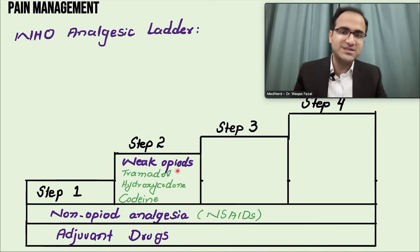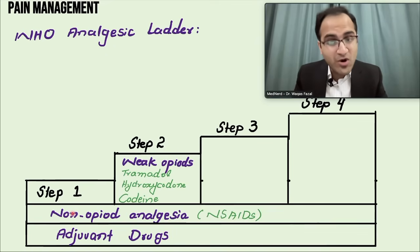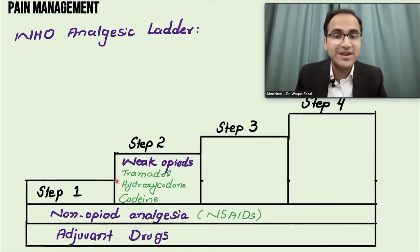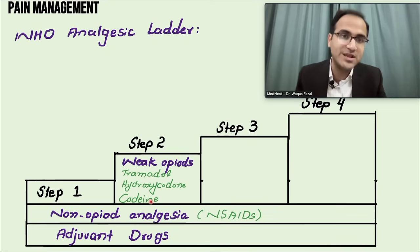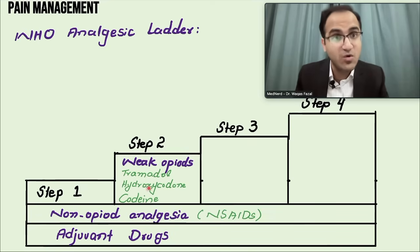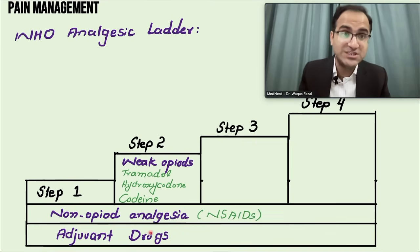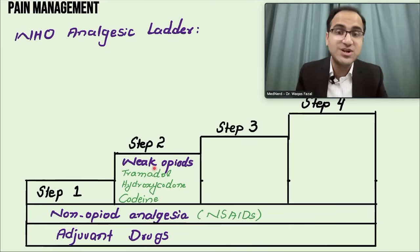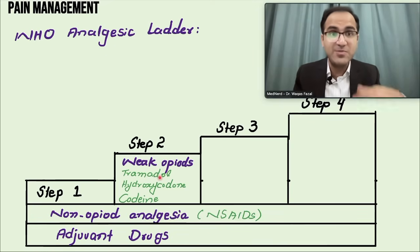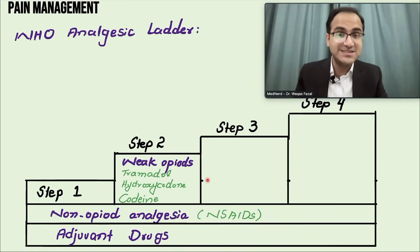In step two, if the patient's pain is not controlled by non-opiate analgesia like NSAIDs, you can escalate to weak opiates like tramadol, hydroxycodone, or codeine. With weak opiates you must continue NSAIDs and adjuvant drugs because they reduce the dose of opiates needed, allowing pain relief with smaller doses.